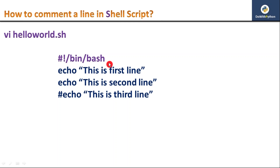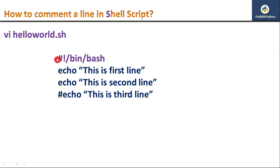Don't confuse the hash with the shebang — hash with exclamation mark defines the shebang line or interpreter of your shell script. But without the exclamation mark, if you use only the hash symbol, then that is commenting your line. Let me execute this script on my terminal and show how to comment a line.